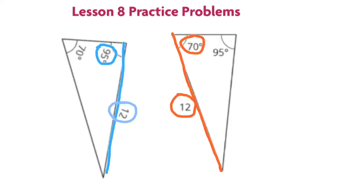However, the triangle on the left has the 95 degrees attached to the 12 unit side length, and the triangle on the right has the 70 degrees attached to the 12 unit side length. Therefore, they're two different triangles.